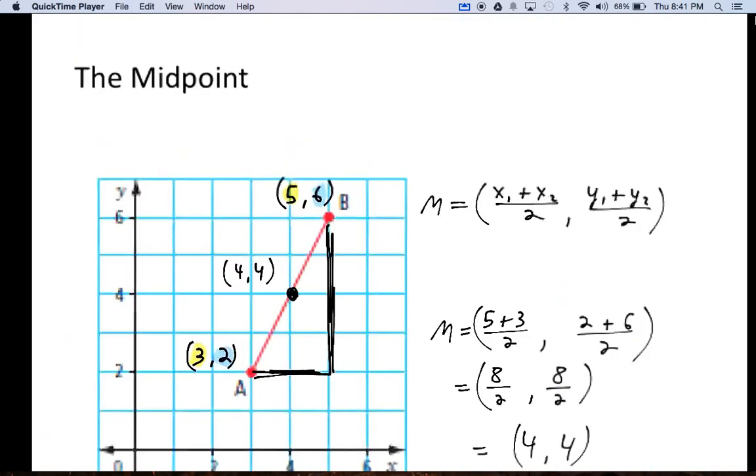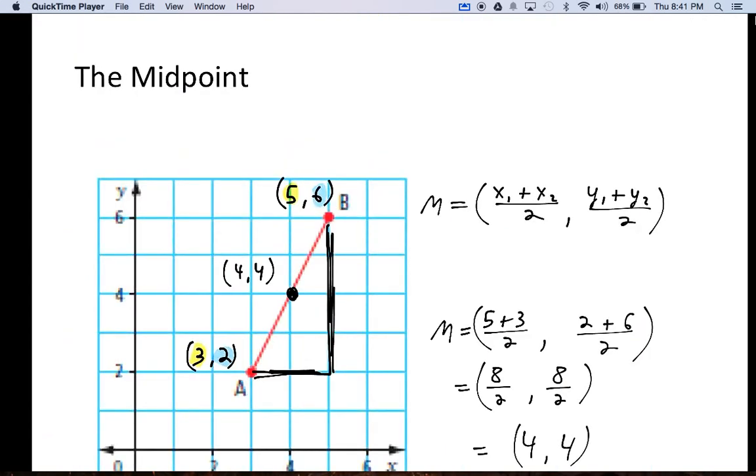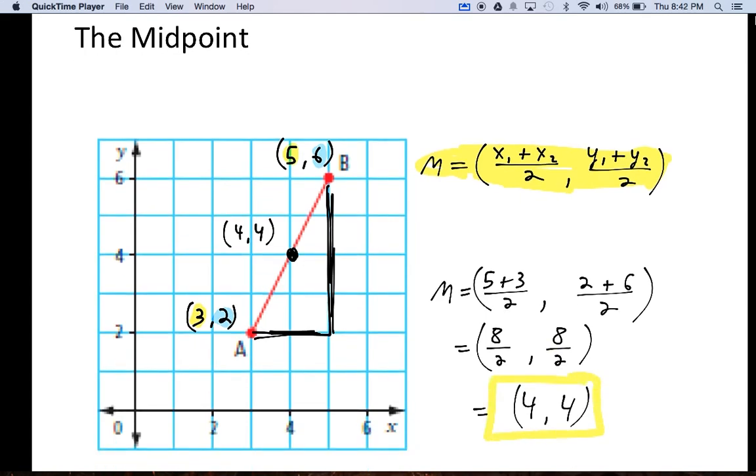This midpoint formula right here I would write down, I would memorize, I would know this thing right here. This is super important. Lastly, your answer for a midpoint question should be in the form of an ordered pair. Right? If I'm finding the midpoint it should be something comma something. That's how we label points on the coordinate plane. That's the midpoint.